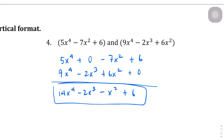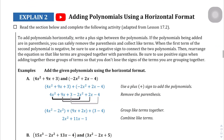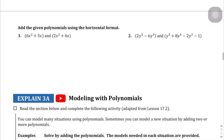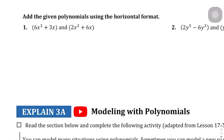Explain 2 — now they want you to add polynomials using a horizontal format. Instead of lining these up vertically, they show you how to do it horizontally. What they do is have you draw lines toward the like terms. Let's color-code this: adding the blue terms together, 6x squared and 2x squared gives us 8x squared; 3x and 6x gives us 9x. There we go.